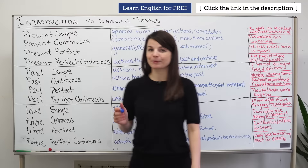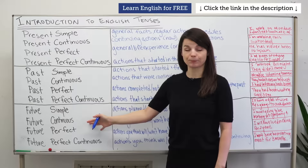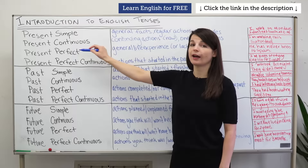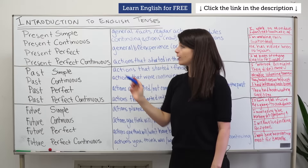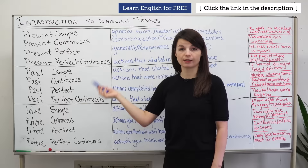The first group of tenses I want to look at is the present tense. I've organized it into three categories: present, past, and future tenses. In each category, I have four different tenses: simple, continuous, perfect, and perfect continuous. You might know continuous as progressive — they mean the same thing.